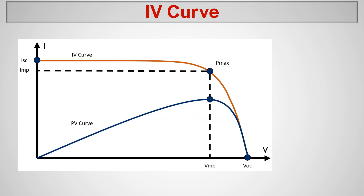Looking at the detailed diagram, the short circuit current is shown here and the open circuit voltage as explained earlier. This is IMP — current at maximum power. First we identify the maximum power point on the IV curve; we get the maximum power at this specific point. At this maximum power point, we ask: what is the current? That is the current output we are getting. And at maximum power, what is the voltage? That is the voltage output we get from the solar panel. This is how the PV curve and IV curve relate to each other.